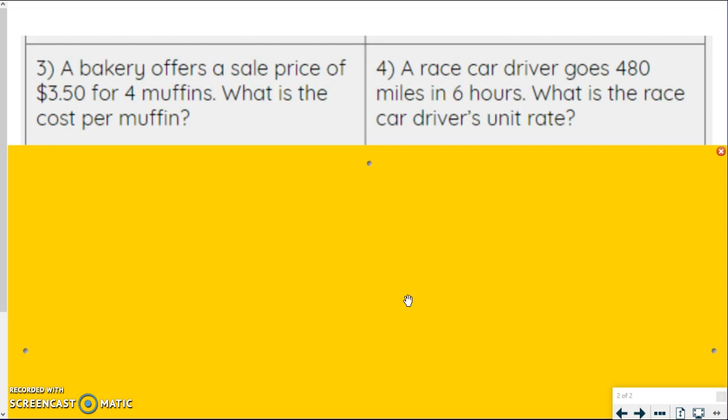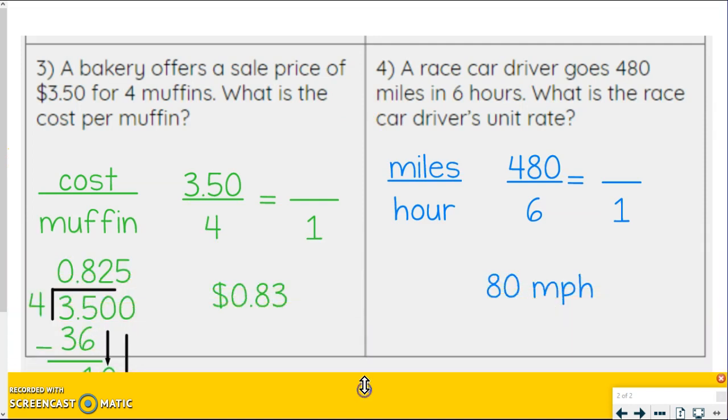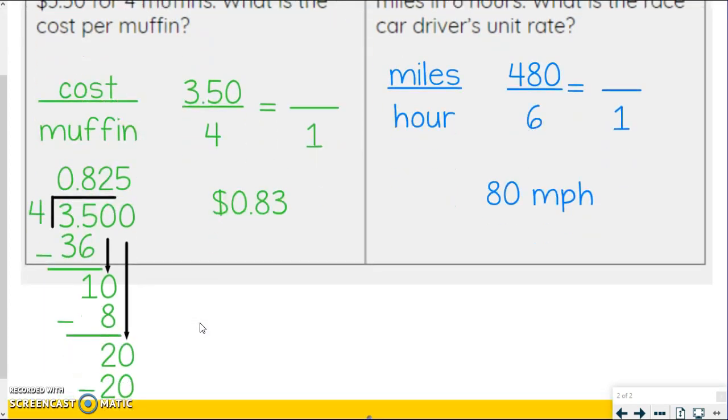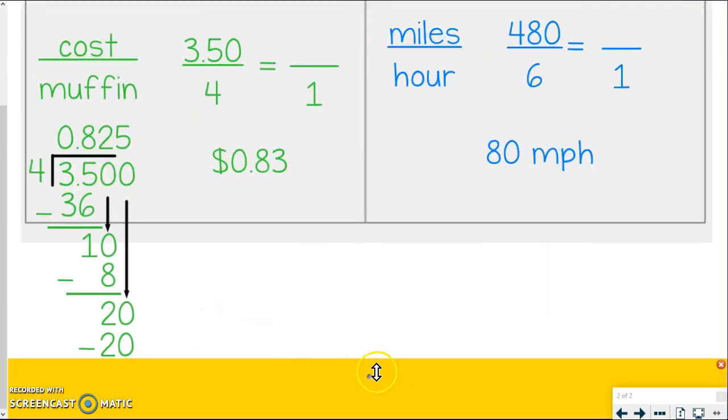I hope you took time to pause this video and try these on your own. So let me walk you through my work on this. So with this first one, I'll scroll down here in just a second. This first one, we're comparing cost and muffins. So I got cost per muffin because that's the order they gave me. And I set up the $3.50 on top, four underneath. And we want to know how much one muffin costs. So we scaled down to one. So I took four divided by four to get one. So I got to do the same thing to the top and do $3.50 divided by four. So I did that off to the side. Now, one thing real quick here that maybe you weren't 100% sure on, is we needed to keep going.